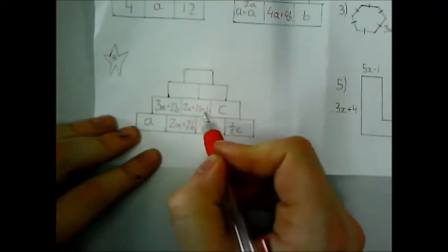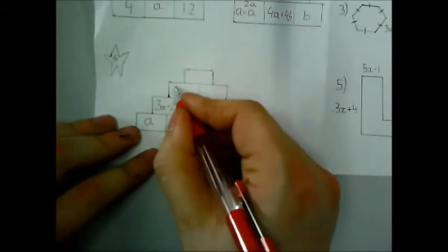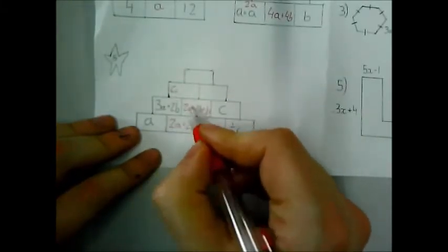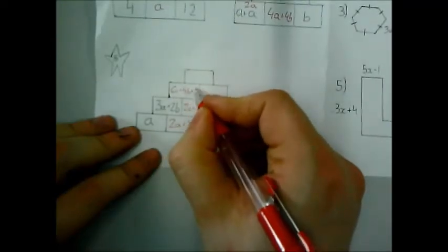OK. This box is 3a plus 2b plus 2a plus 2b plus half c. So 3a plus 2a is 6a. 2b plus 2b is 4b plus my half c.